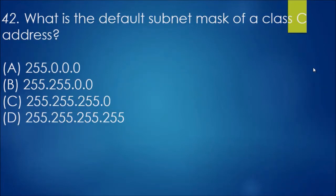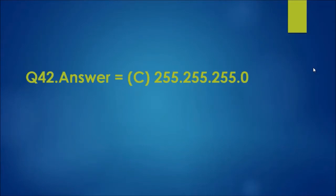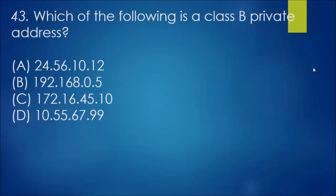Obviously for class C, it's three 255s after that. For question 42, what is the default subnet mask of a class C address? Pretty much what I was just saying, the answer will be C because there's three lots of 255s. That's essentially how it works.